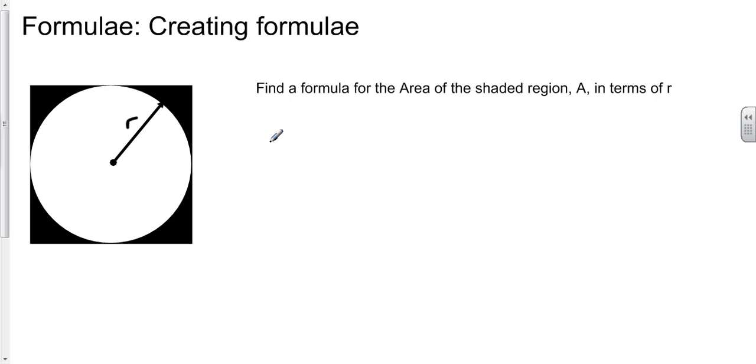So looking for some sort of formula, A equals... The shaded region is the square minus the circle that's in the middle. So our area is going to be essentially made up of the square minus the circle.